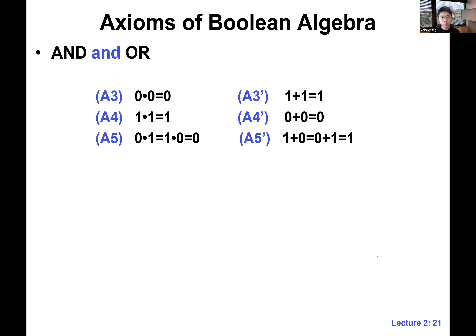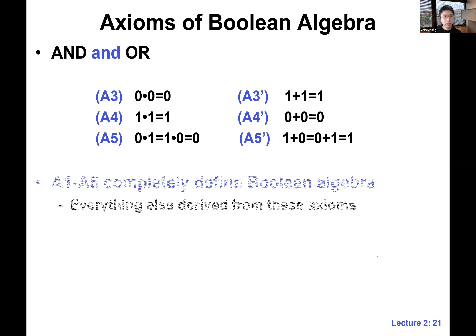There's a saying: simplicity is the ultimate sophistication, and that is very true for Boolean algebra. That's it — believe it or not, this is all we need to know to derive everything else. So what are the other things that we can derive?